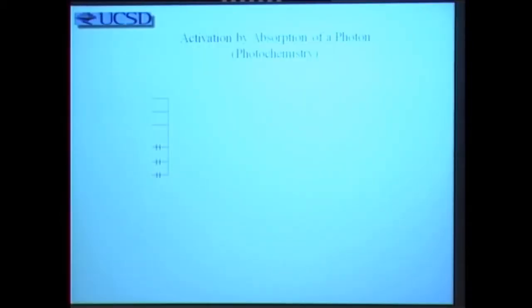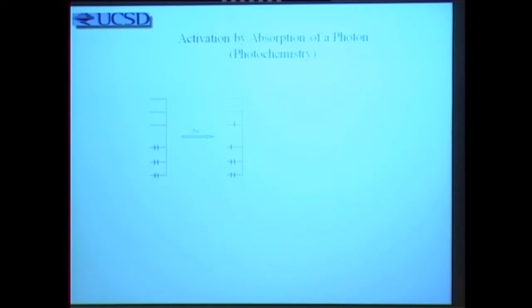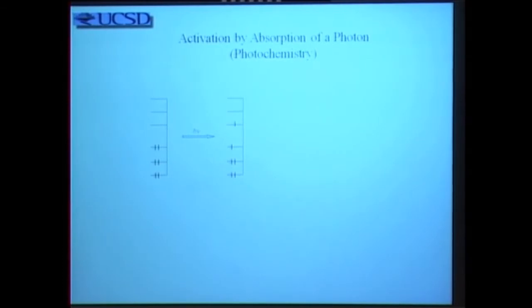Photo-induced electron transfer is a very simple way of having two reagents combine, and if they don't combine directly, by activating with light you can get all sorts of different reactivity. Think, for example, about a molecule that is characterized by a number of filled orbitals, indicated by horizontal lines, and electrons, which are indicated by vertical lines.